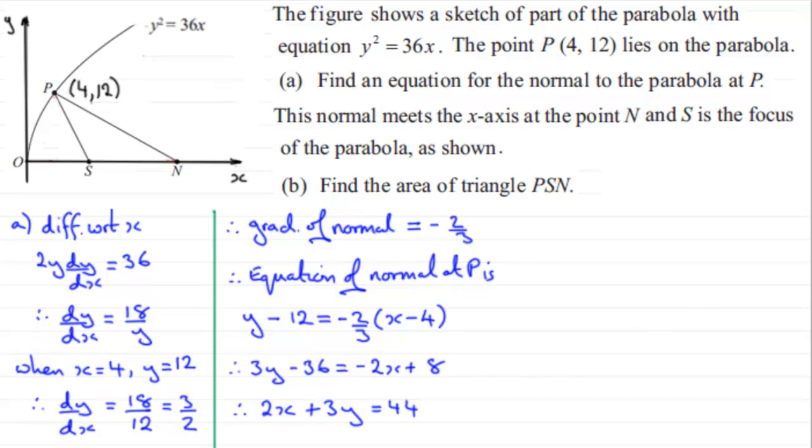Now in part B, we've got to work out the area of our triangle, our triangle PSN. So we're going to need the base, the length of the base here, and we're going to need to know what this height is up here. Well, we know that height. That height is clearly 12 units. We'll mark in 12 whilst we're here as being the height. But we need to get this length here.